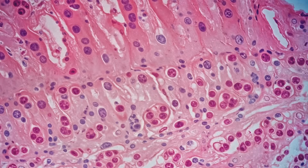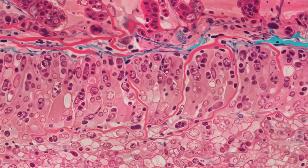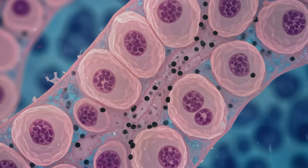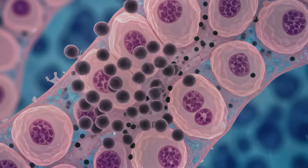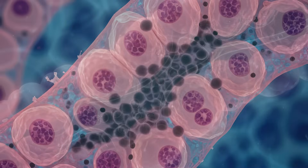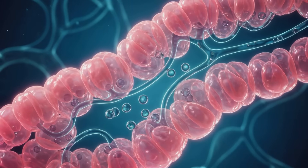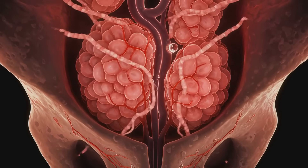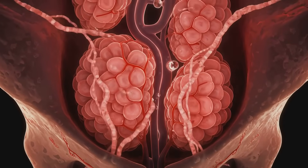Skeene's glands consist of secretory epithelium with a dense capillary network that supplies the gland during arousal. The presence of secretory granules within glandular cells represents active fluid production. This intricate structure allows the glands to respond effectively during periods of arousal, contributing to their unique function.